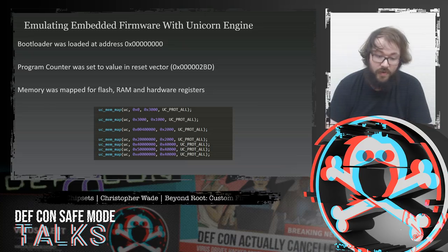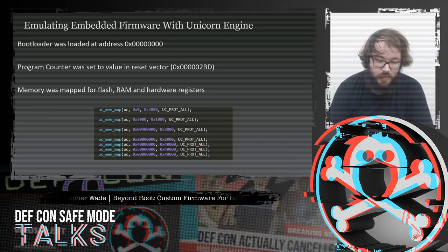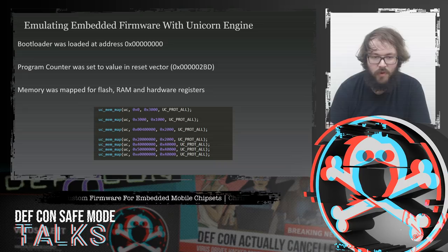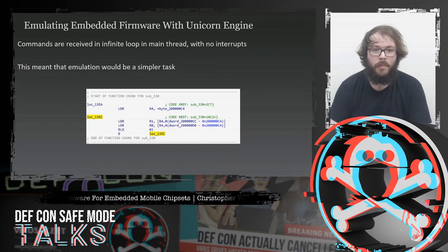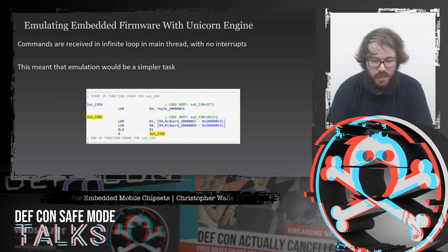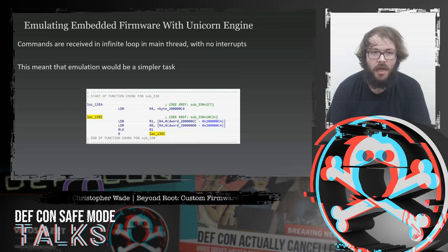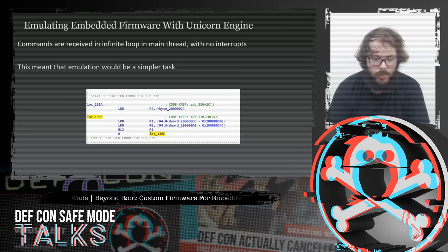The bootloader was loaded into address 0 — the start of flash memory — and the program counter was set to the reset vector found in the bootloader, 0x2BD. Memory was mapped to flash, RAM, and hardware registers as needed. Commands were received in a single thread that looped receiving I2C commands, meaning there were probably no interrupts in use, which made emulation a simpler task.